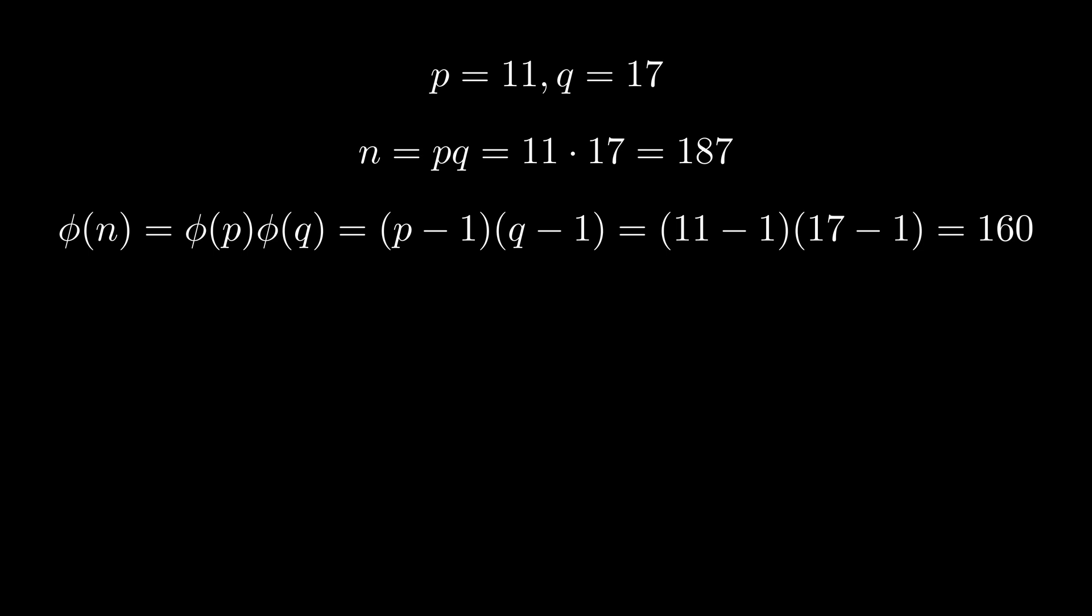We can check that any number to the 160 mod 187 would be 1. We can say that m to the power of k times 160 plus 1 is m itself, mod 187. Now we set ed to that, which we can also say ed equals 1 mod 160.